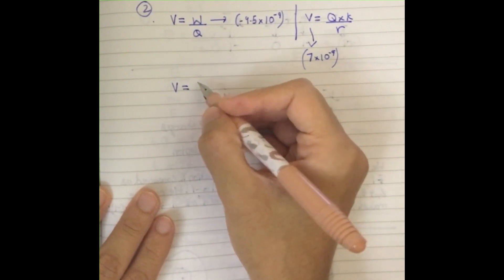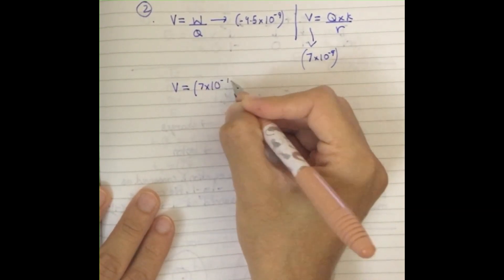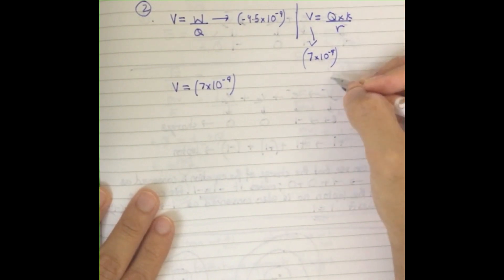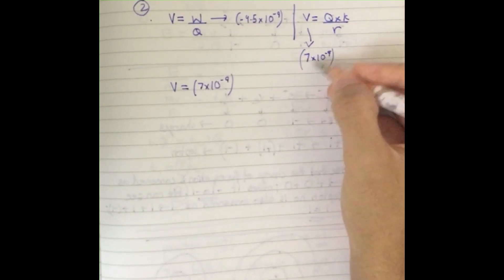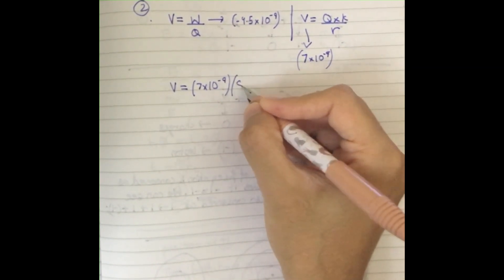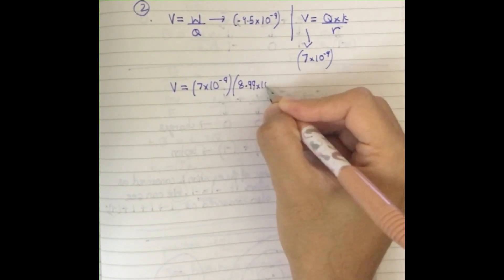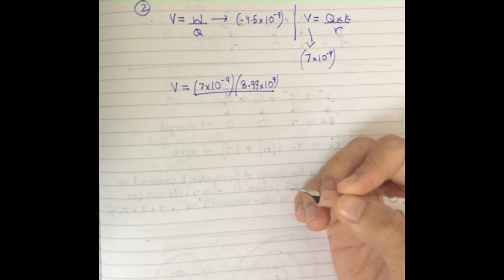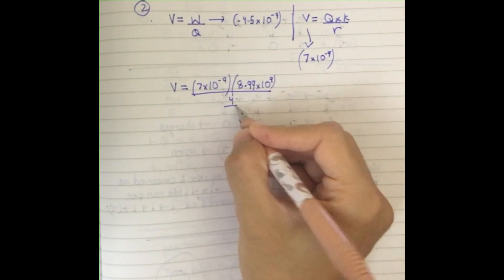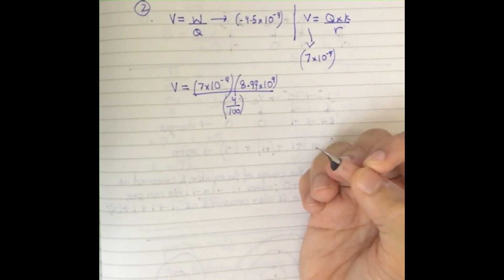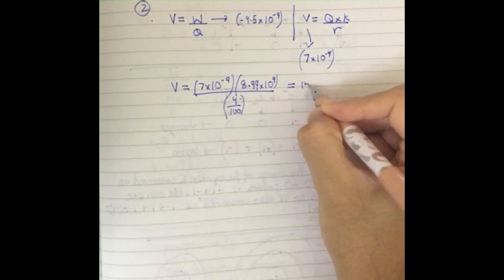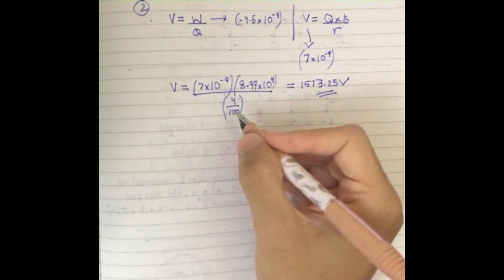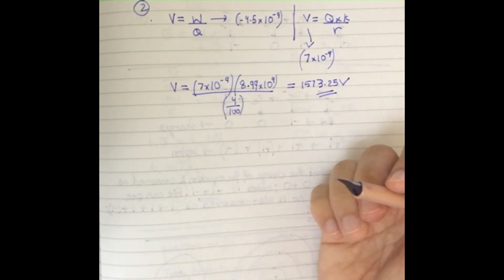We calculate V using the charge of 7 times 10 to the power of minus 9, k equals 9 (given at the end of the exam paper), and the radius of 4 centimeters, which is 4/100 meters. This gives an electric potential of 1533.25 volts for the 4 centimeter distance.